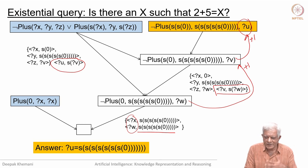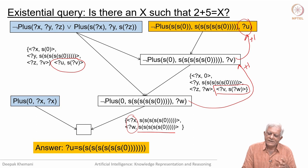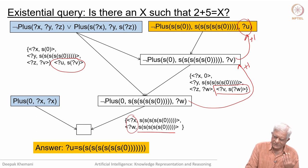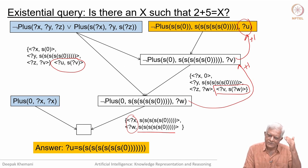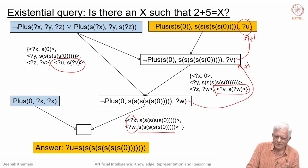Instead of using some other code to add two numbers, you can do addition using theorem proving. But it is obviously not advisable. Just imagine adding 20000 with 11500 — since you are recursing on the left-hand side from 20000, you will have 20000 steps of derivation just to find the answer. Clearly we do not use logic programming for things like addition, but we show that it is based on the foundations of mathematics.